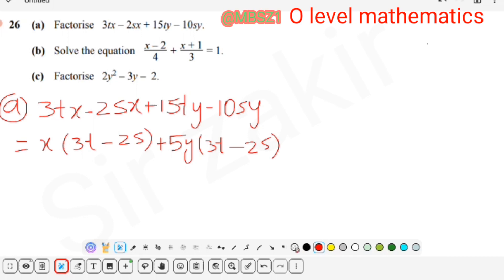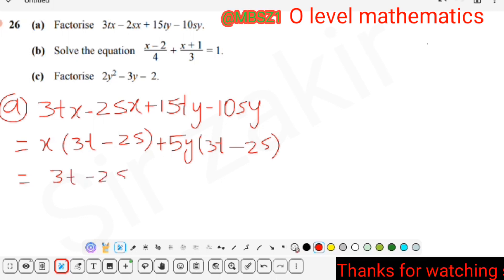Then we see 3T - 2S is the common term. It will be written once: 3T - 2S, and the other factor will be X + 5Y. This is the answer. This form is completely factorized.